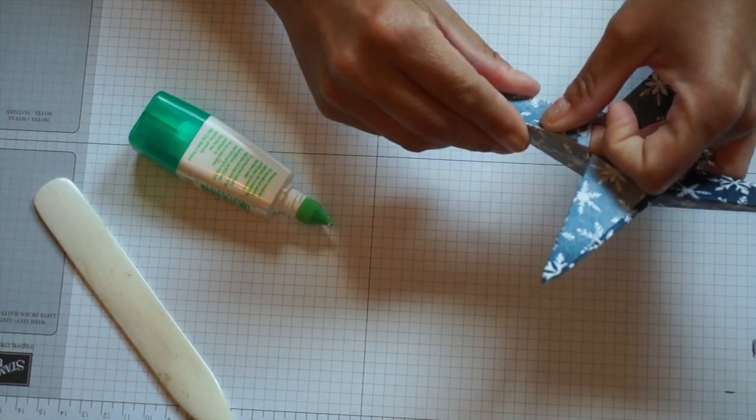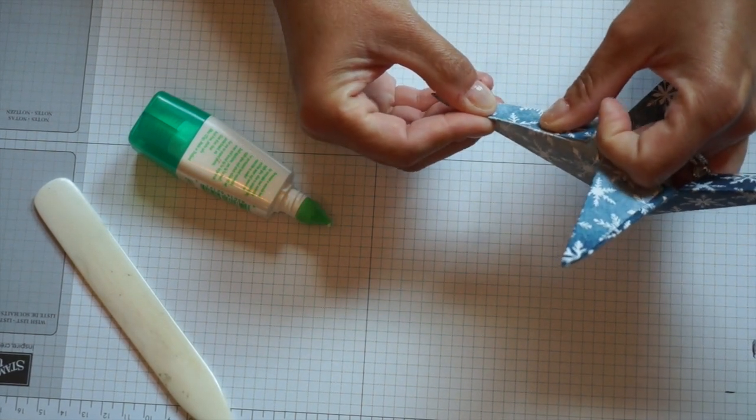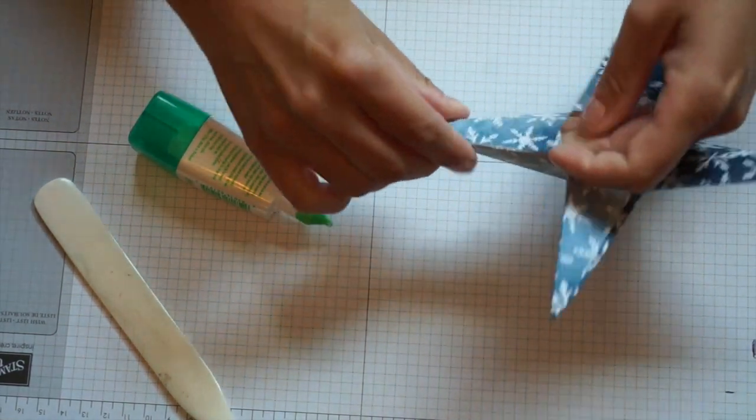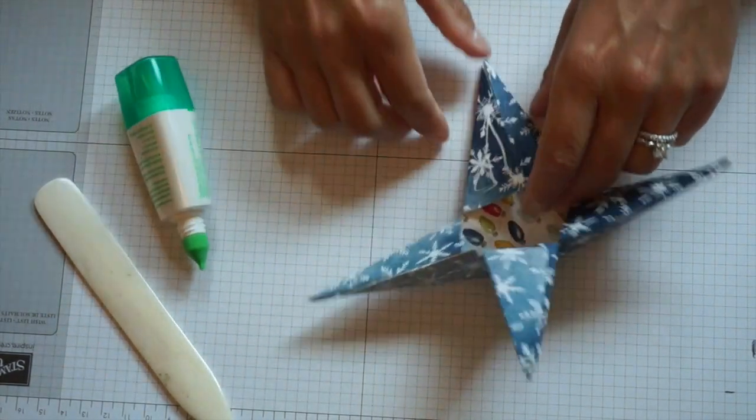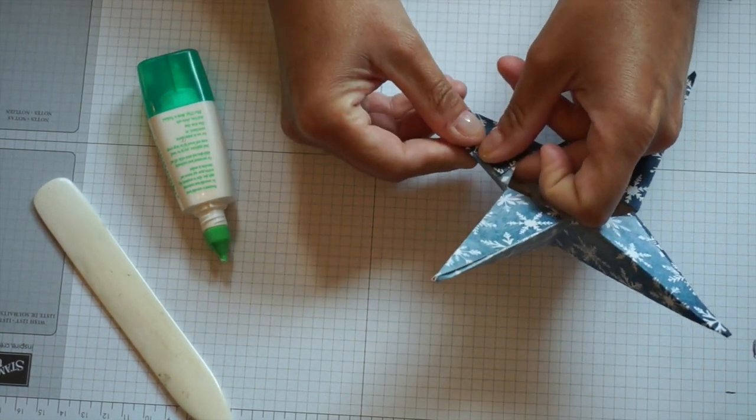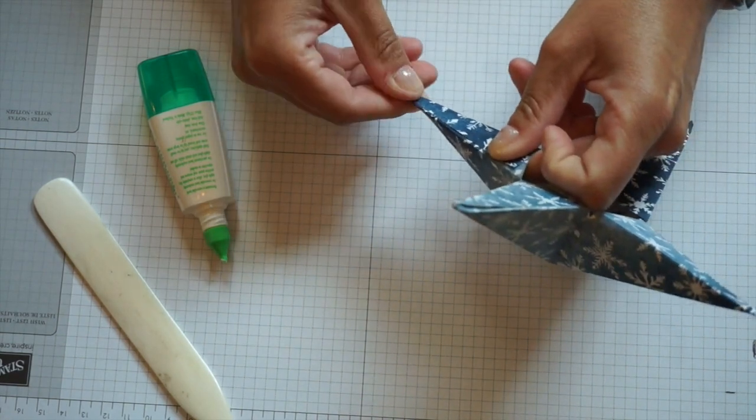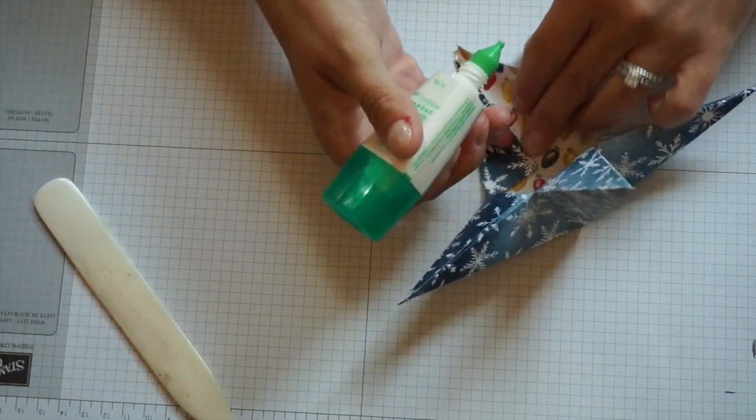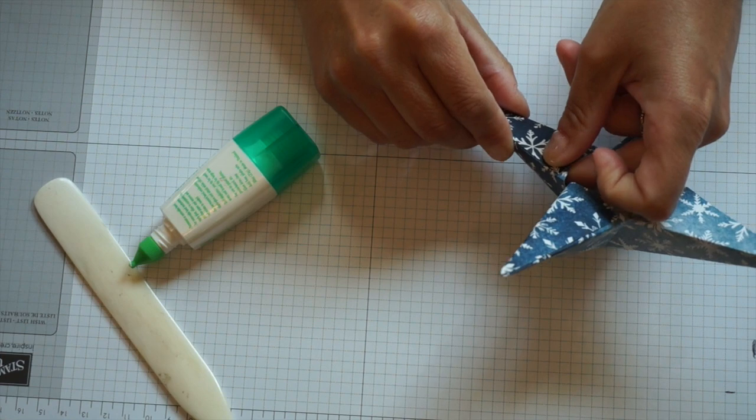Make sure you kind of move it around. That's why I use Tombow, because you can kind of get it positioned just right before you squeeze it and hold it down. One last side, and there we go.